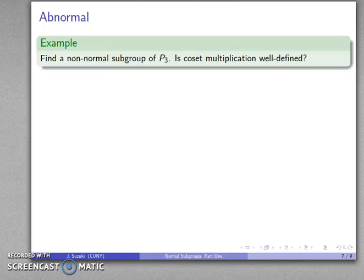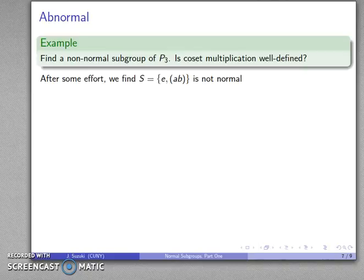Since every subgroup of an abelian group is normal, we have to consider the non-abelian groups. And so the simplest one we know of is P3. And so is coset multiplication well-defined? Well let's find a non-normal subgroup.